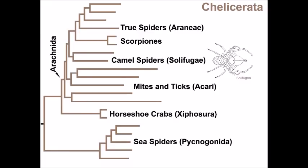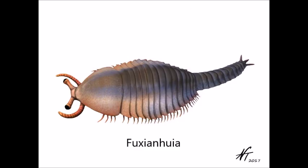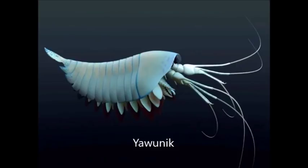Now, the origin of chelicerates has been difficult to describe, and a number of different groups have been proposed as ancestors to the clade. For example, an order of arthropods known as Aglaspidida was originally thought to have been stem chelicerates, but evidently these arthropods were more closely related to trilobites. Also, the Cambrian Fuxhianheia was considered to be a stem chelicerate, but more recent analyses have placed it as a basal arthropod. But there is a Cambrian clade called Megacheira, which includes Yawunik, that bears strong resemblance to the chelicerates, so maybe they are closely related to the chelicerates.